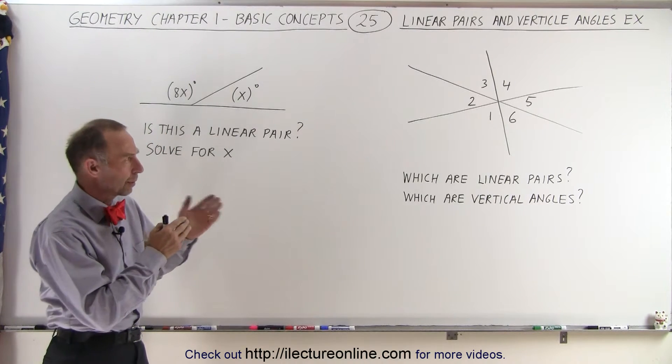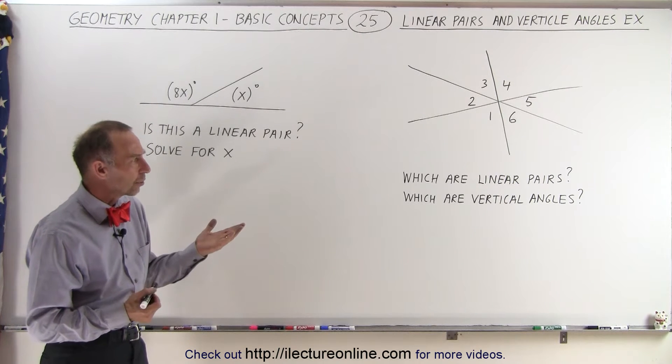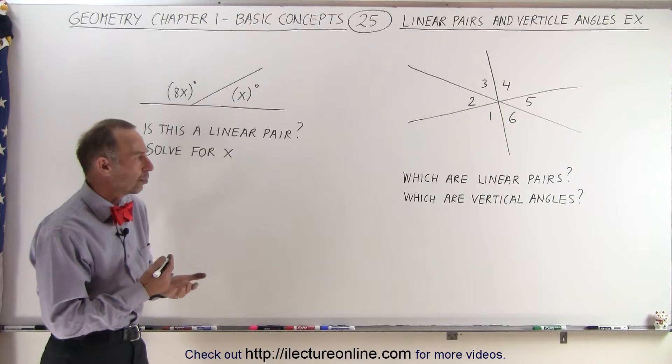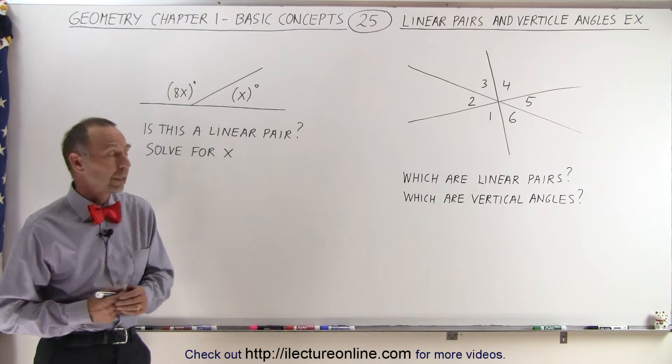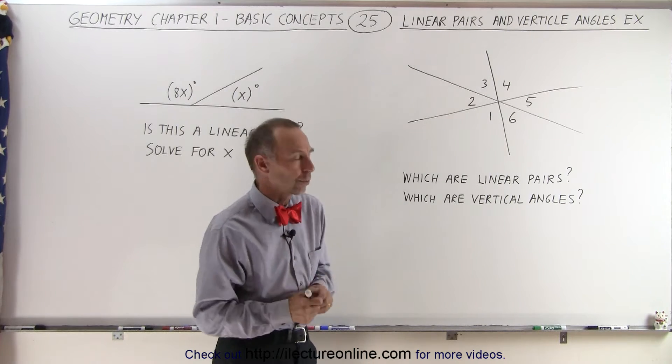Now if we look at the example on the right and we have six angles there, which of those angles are linear pairs and which of those are vertical angles? Well, the definition of linear pairs is that the two added together add up to 180 degrees.